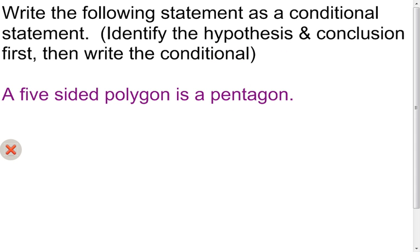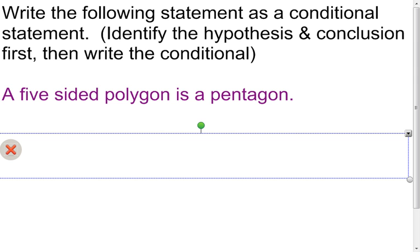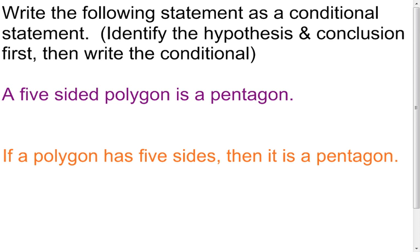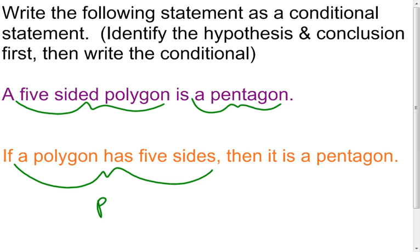Now I want to take a plain statement — 'a five-sided polygon is a pentagon' — and turn it into a conditional statement in if-then format, keeping the same meaning. So I write: 'If a polygon has five sides, then it is a pentagon.' The first part, 'a polygon has five sides,' is the hypothesis P, and 'it is a pentagon' is the conclusion Q.